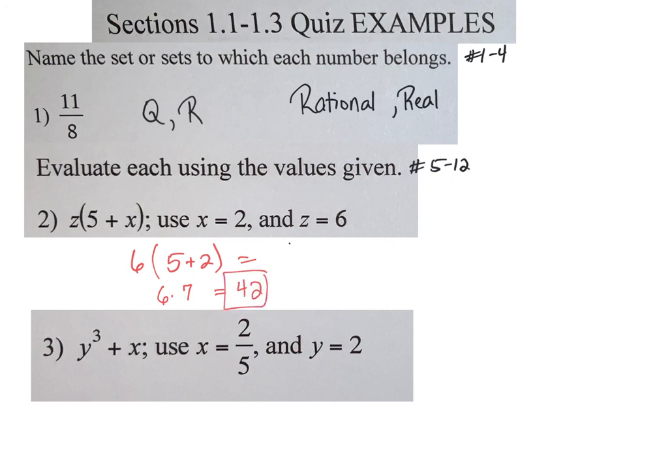And then the dreaded fraction ones, exactly the same. Y cubed plus x. Y here is 2, so I would say 2 cubed plus x. Do my exponent first: 8 plus 2 fifths. You can say 8 and 2 fifths or get a common denominator. Either way, you're going to get 42 fifths or 8 and 2 fifths. Same thing.